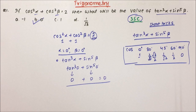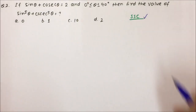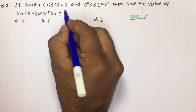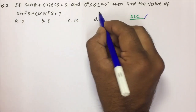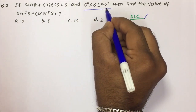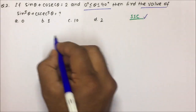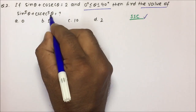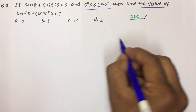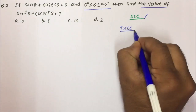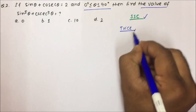Moving towards question number 2. Question number 2 has also been asked in the SSC exam. If sin θ + cos θ = √2 and θ is between 0 to 90 degrees, then we have to find the value of sin⁵θ + cos⁵θ. I am going to tell you one trick that you have to keep in mind always.